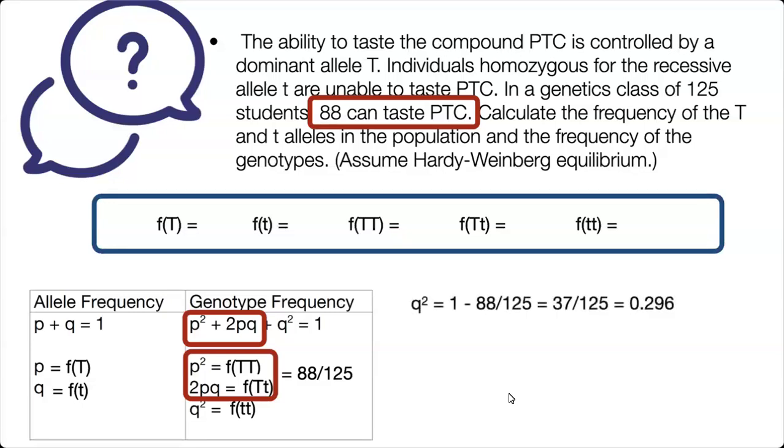We can start with Q squared. So we know that P squared plus 2PQ plus Q squared equals 1. And so Q squared is going to be equal to 1 minus that combination of P squared and 2PQ. So we know that Q squared is equal to 0.296. So we have found the frequency of little t little t.